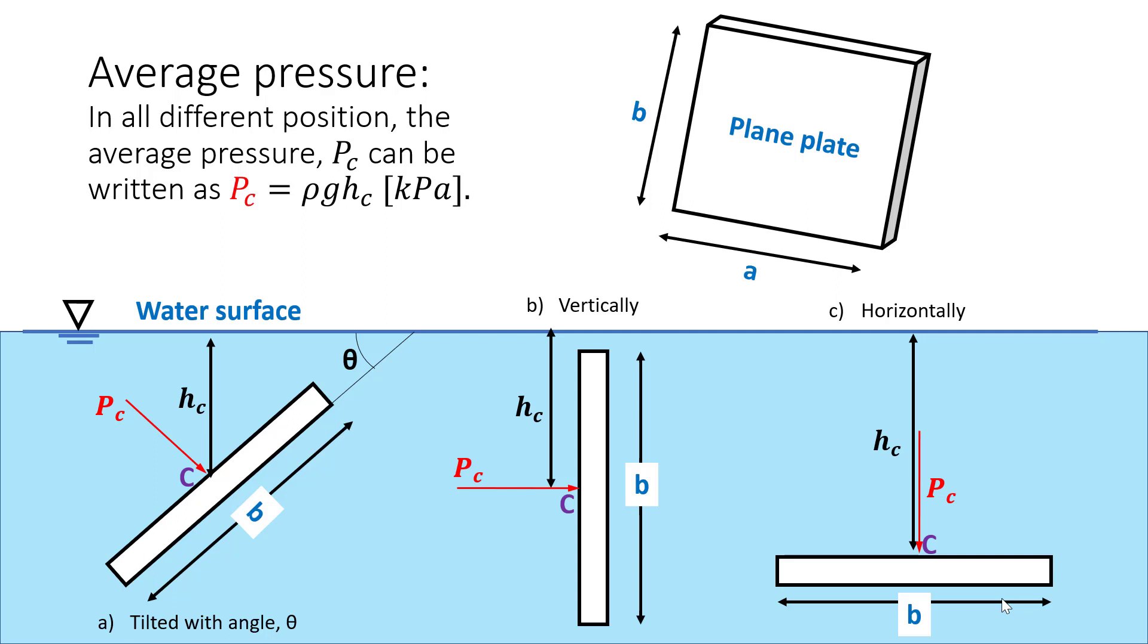The average pressure, Pc, in all different positions can be written as Pc equal to ρghc, where hc is the distance from the water surface to the centroid of the plane body. This means the average pressure Pc is also acting at the centroid of the plane body, which is the point C.